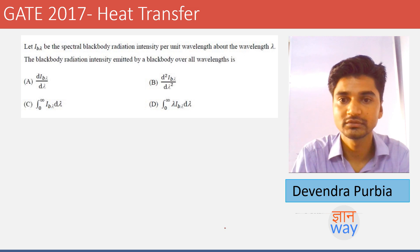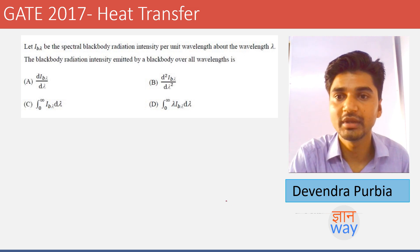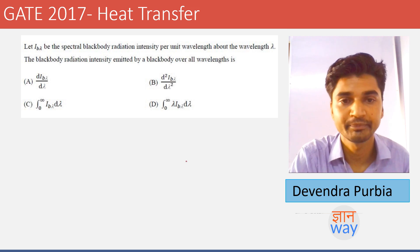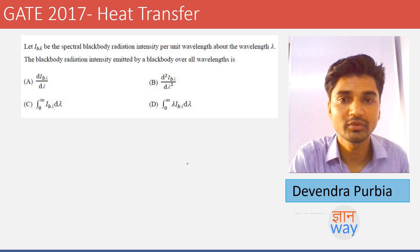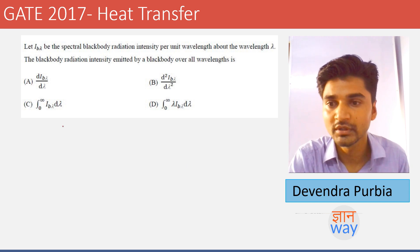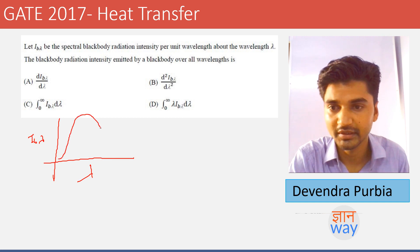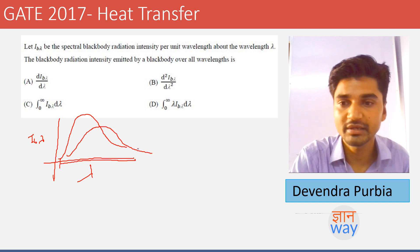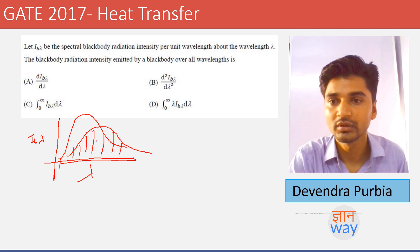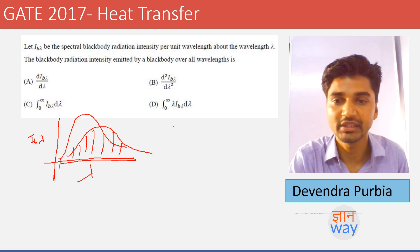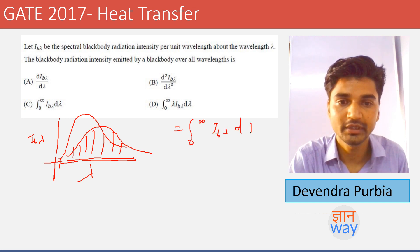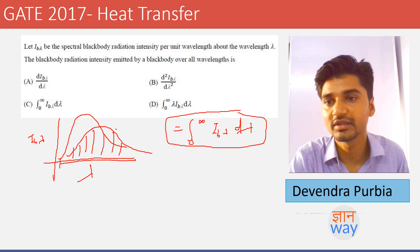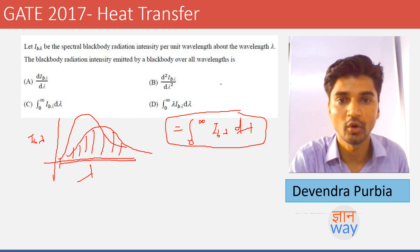The next question asks: if I_b_lambda is the spectral black body radiation intensity per unit wavelength at wavelength lambda, what is the total black body radiation intensity emitted over all wavelengths? From theory, plotting I_b_lambda versus lambda gives different black body curves, and the area under the curve from 0 to infinity gives the total intensity, expressed as the integral from zero to infinity of I_b_lambda·d_lambda.